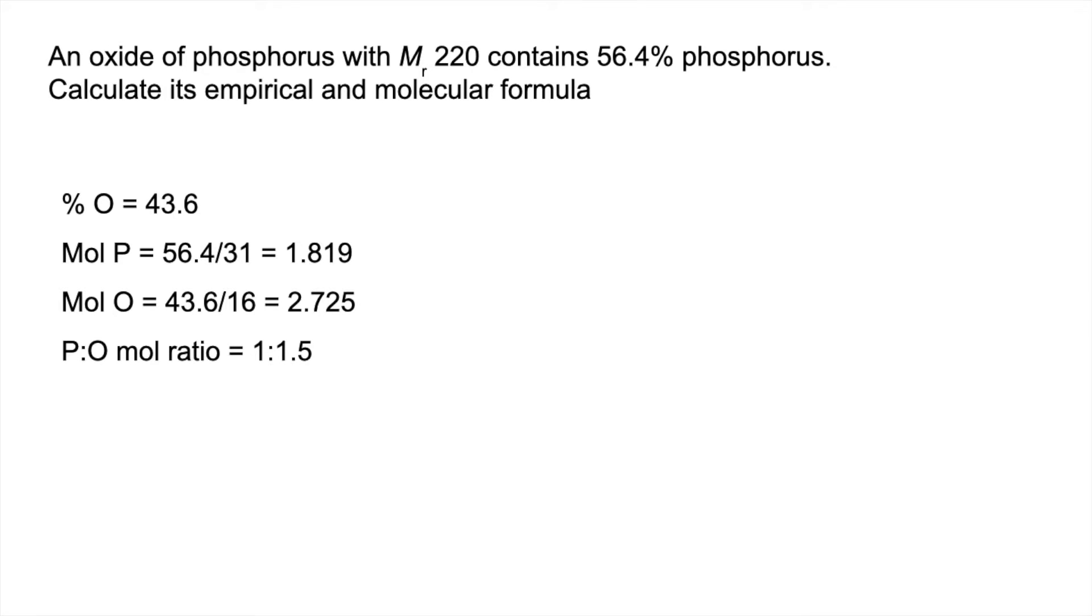So we'll multiply out, and we get an empirical formula of 2 to 3. So it's P2O3 as the empirical formula.